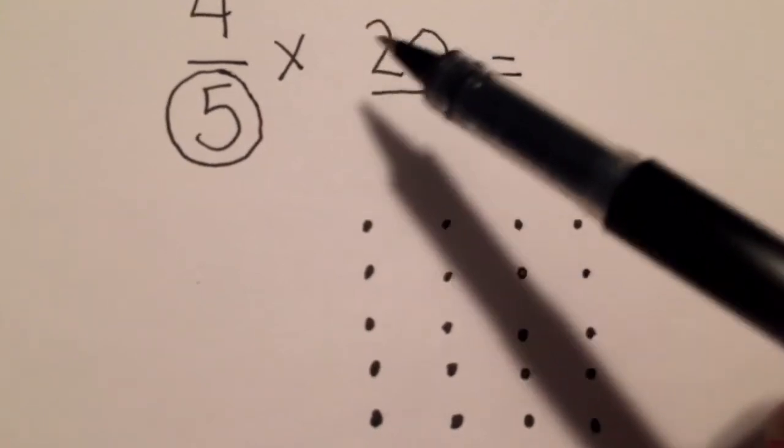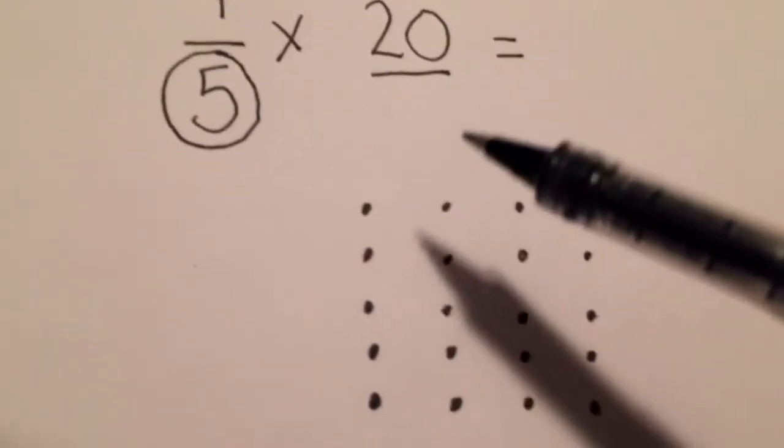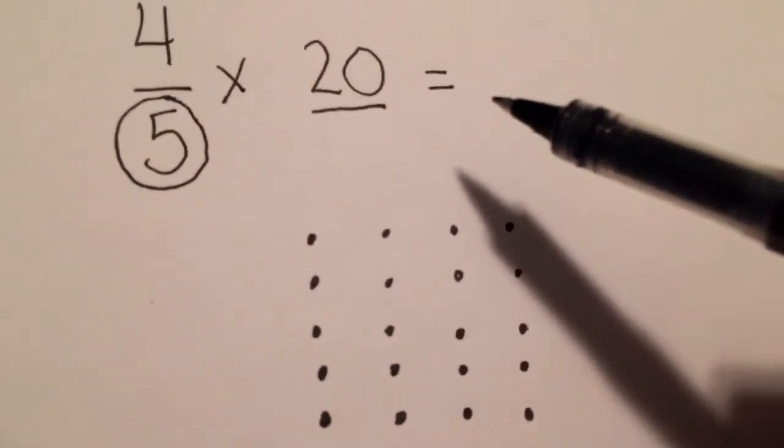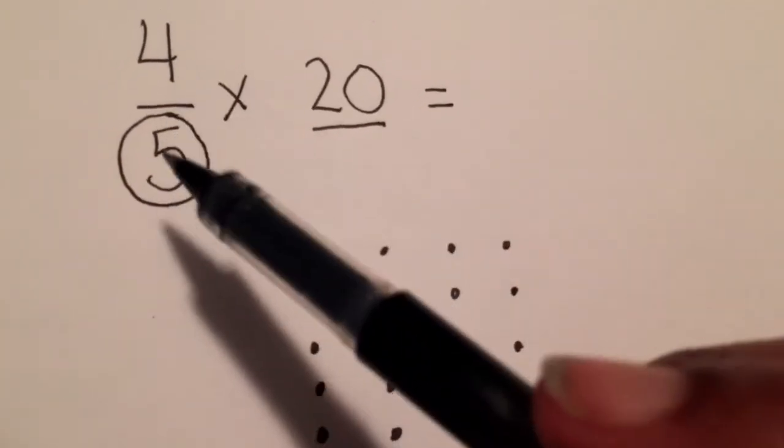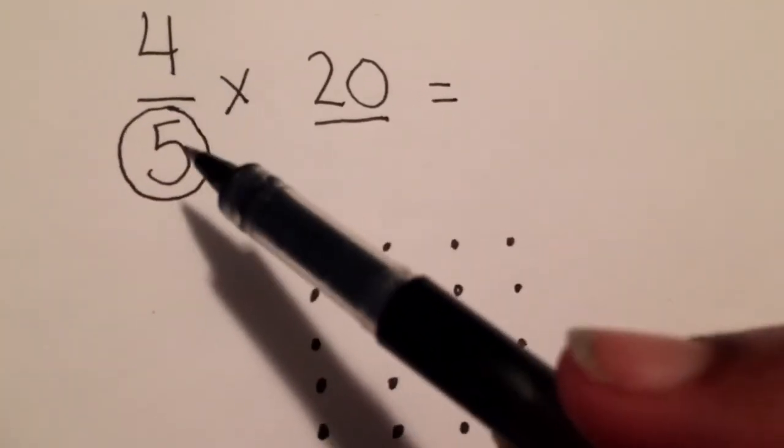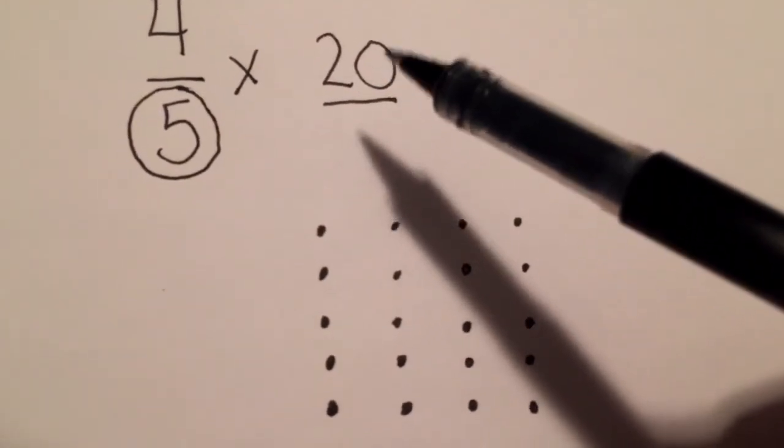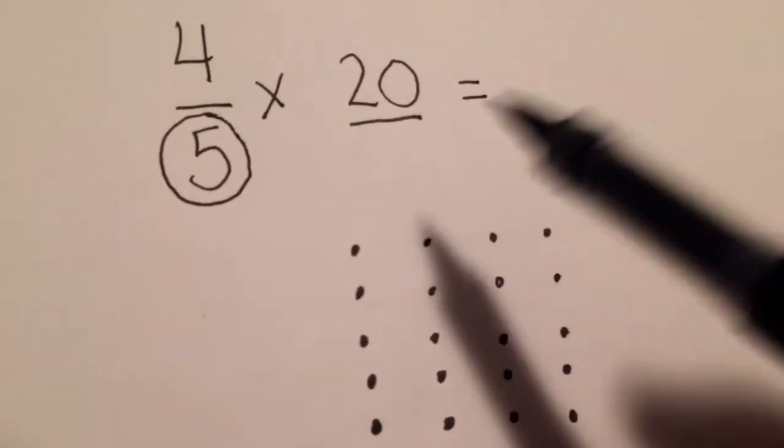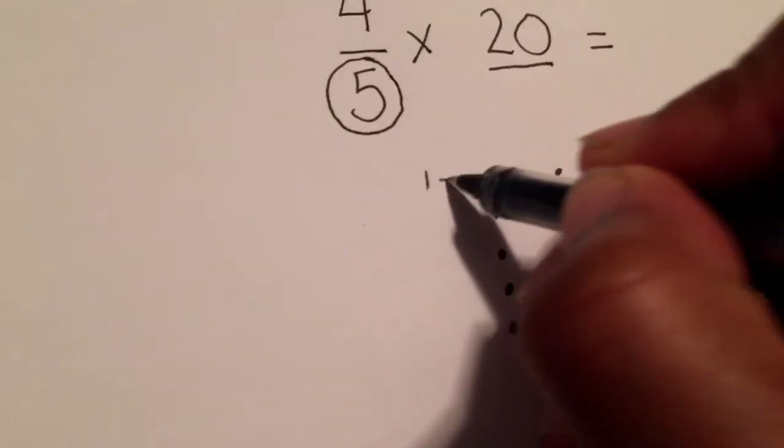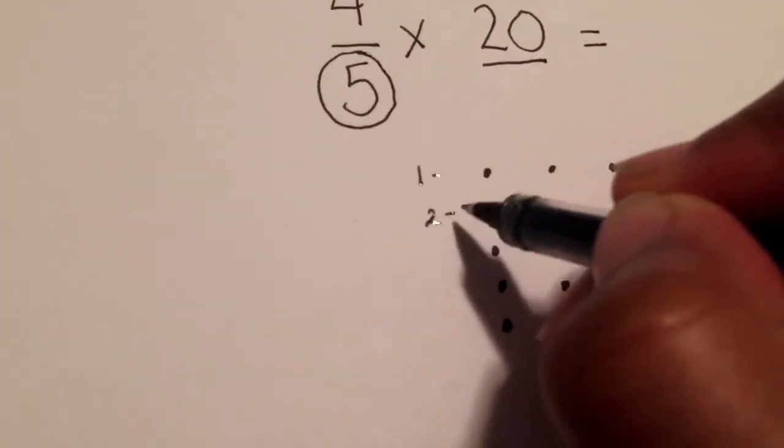So I've broken my twenty up into my five groups. Now in order to find four-fifths, or four out of the five groups, I'm going to isolate them by rows. So we have five rows all together, right? One, two, three, four, and five.